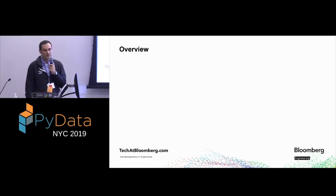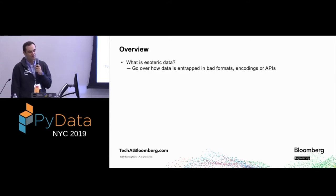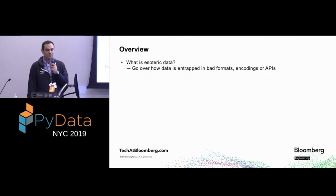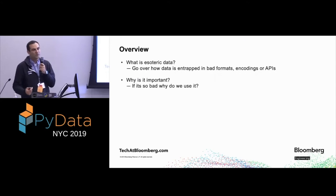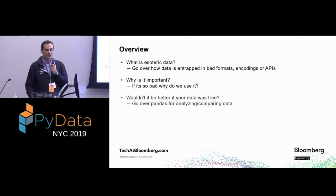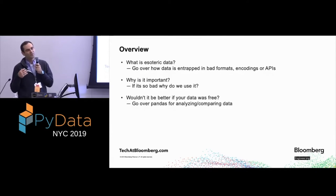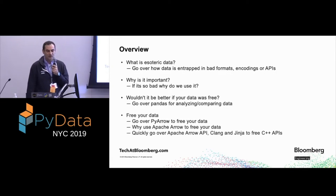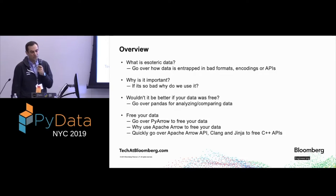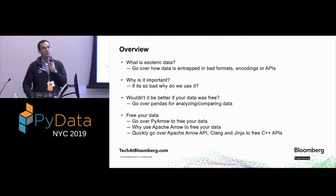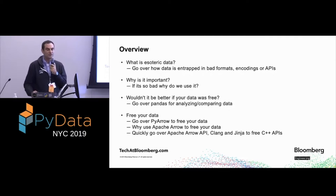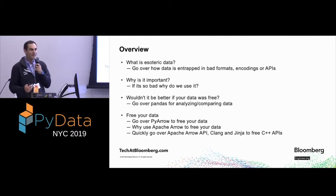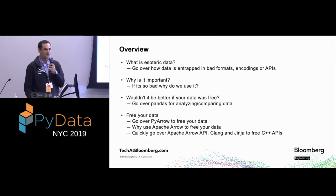Let's go over the talk. First, I'm going to show you what esoteric data is, and how data is entrapped in bad formats, encodings, or APIs. We'll cover why it's important, then show you how to use Pandas to elegantly compare your data, and how to free your data using PyArrow. Then I'll cover why you want to use PyArrow and Apache Arrow, and finally how to use the Apache Arrow API, Clang, and Jinja to free C++ APIs.